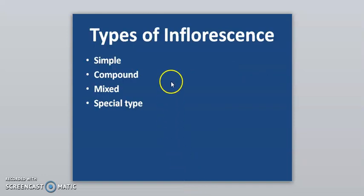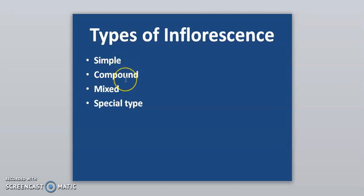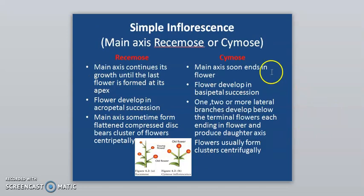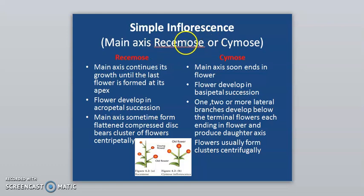There are four major types of inflorescence: simple inflorescence, compound inflorescence, mixed inflorescence, and special types of inflorescence. In simple inflorescence, the main axis may be racimose or cymose type.